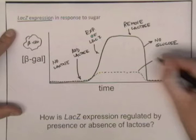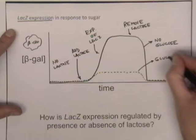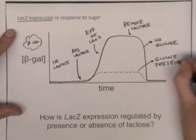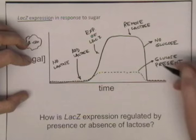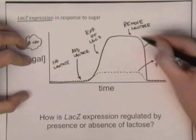This dotted line represents what happens if glucose is present. Remember that glucose is the preferred energy source, and so this makes sense. If glucose and lactose are both present, you do get a little bit of expression of these genes, but it's not nearly as much as if lactose is the only sugar.